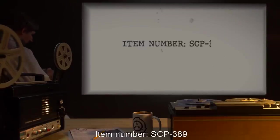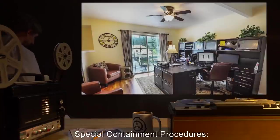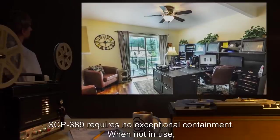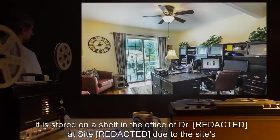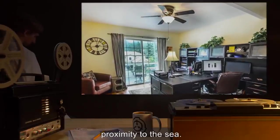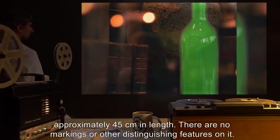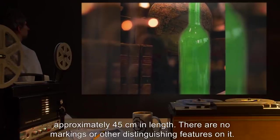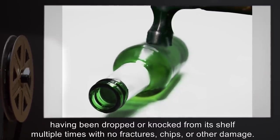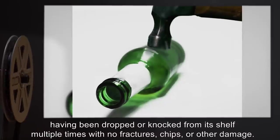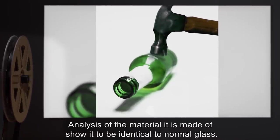Item number SCP-389, Object Class Safe. Special Containment Procedures: SCP-389 requires no exceptional containment. When not in use, it is stored on a shelf in the office of Dr. [REDACTED] at Site [REDACTED] due to the site's proximity to the sea. Description: SCP-389 is a green glass bottle approximately 45 centimeters in length. There are no markings or other distinguishing features on it. SCP-389 appears highly resistant to damage, having been dropped or knocked from its shelf multiple times with no fractures, chips, or other damage. Analysis of the material it is made of show it to be identical to normal glass.